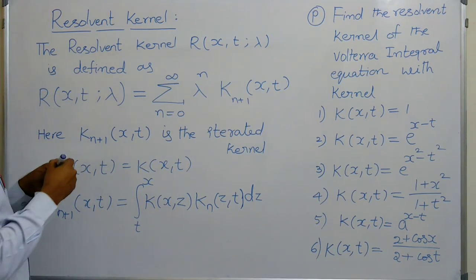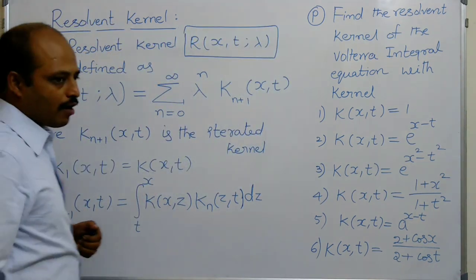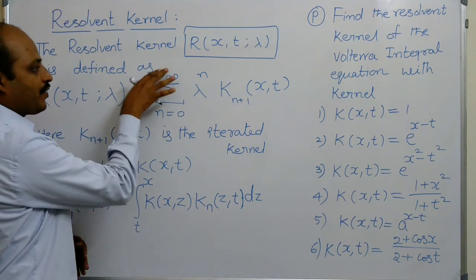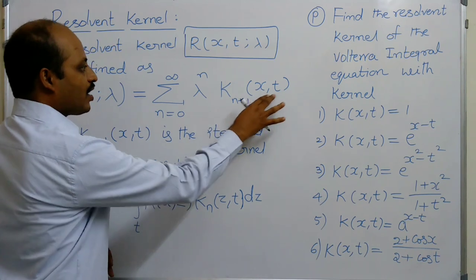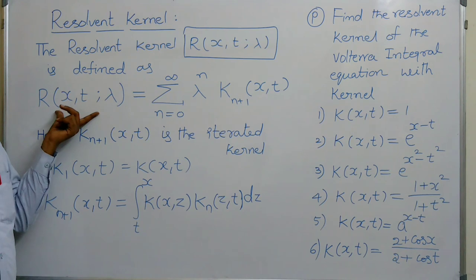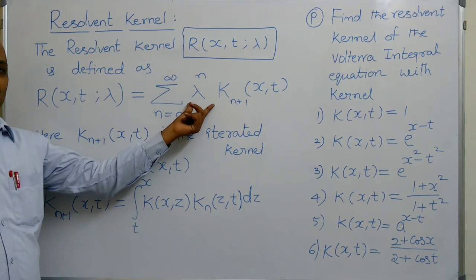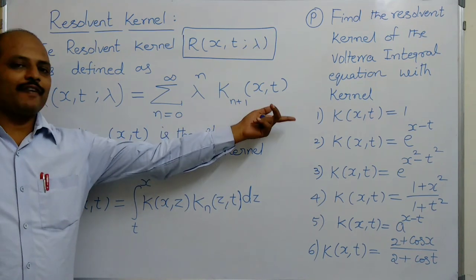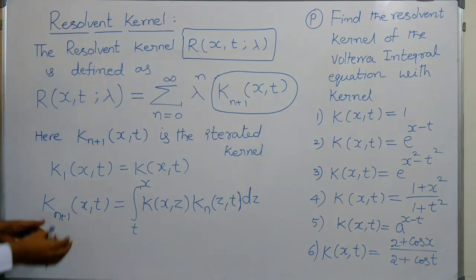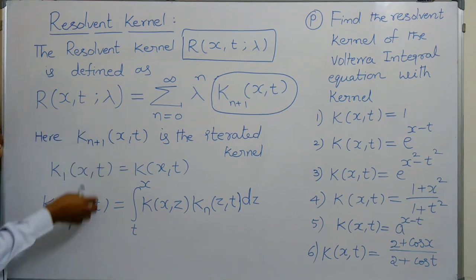The resolvent kernel is denoted by the symbol capital R of X, T, Lambda, and defined as summation n equals 0 to infinity, Lambda power n, K(n+1) of X, T. Where K(n+1) of X, T is nothing but the iterated kernel. The iterated kernels are evaluated by specific formulas.